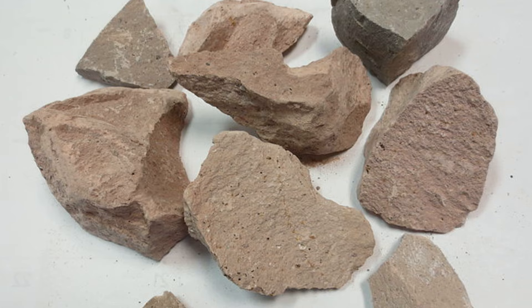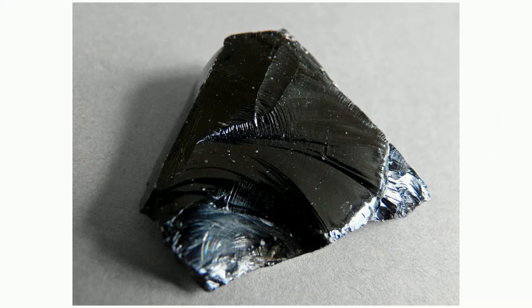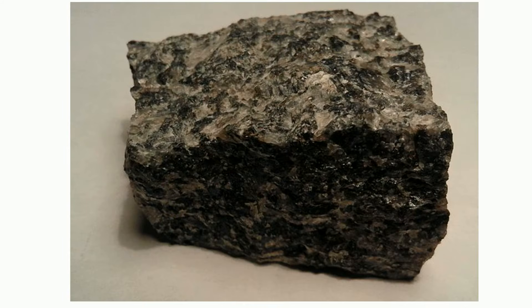Extrusive rocks have a very fine texture. Some, like obsidian, may even be smooth. Intrusive rocks have a coarse texture, which can be described as rough. Because intrusive rocks have larger crystals, this makes their texture rough.